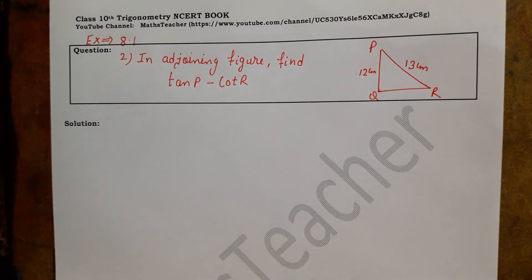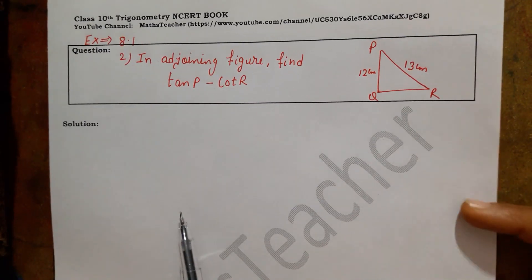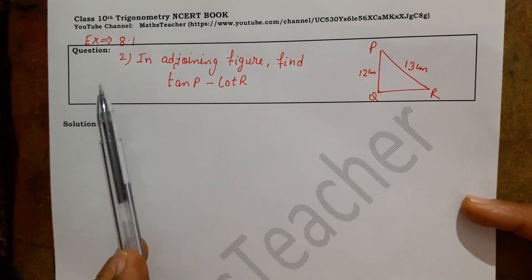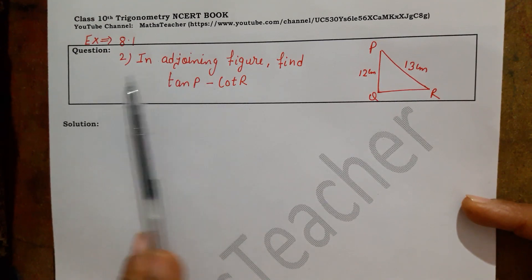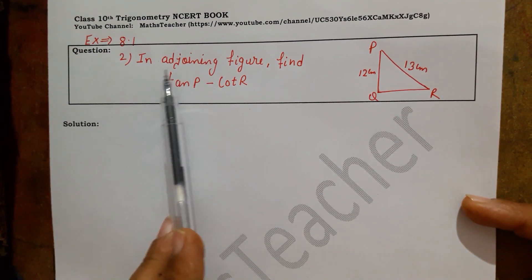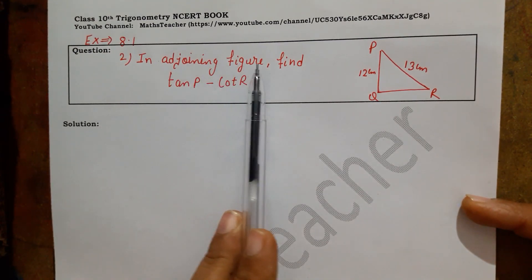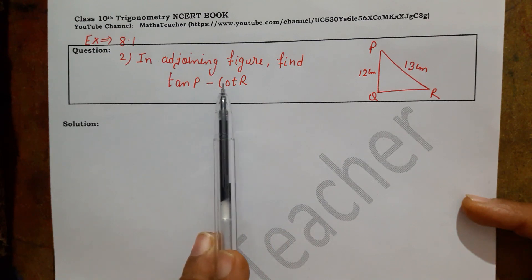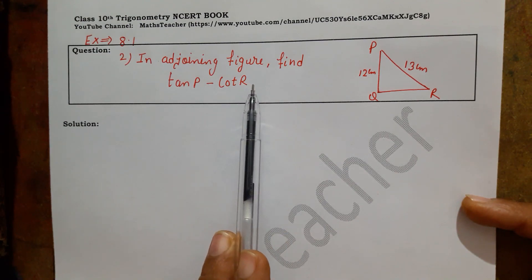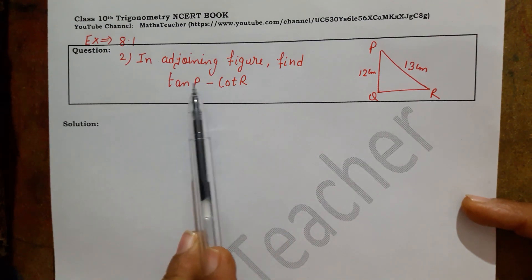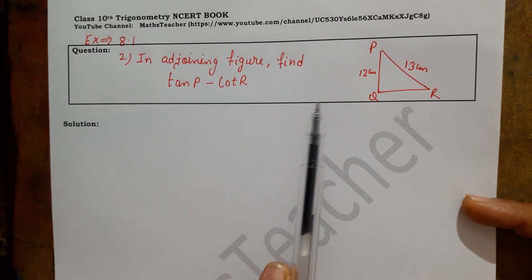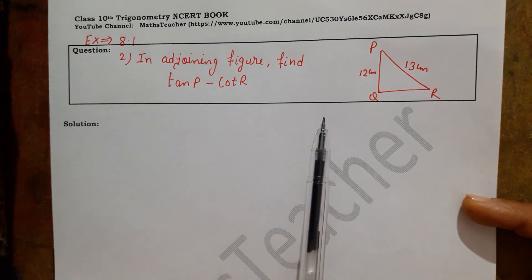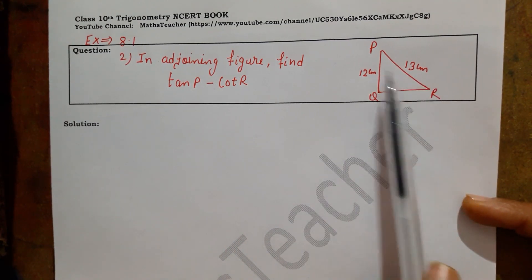Hello viewers, welcome to my channel. Today we will do exercise 8.1, question number 2: in the adjoining figure, find tan P minus cot R.